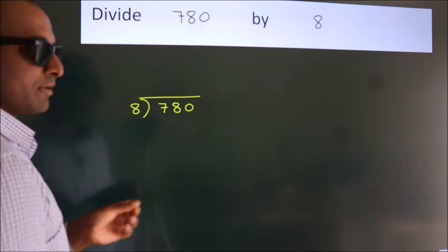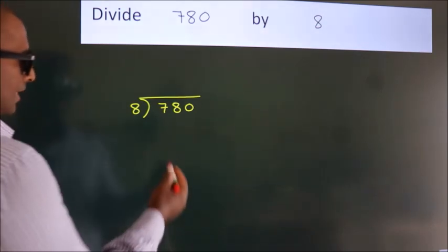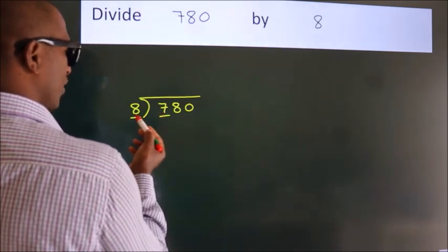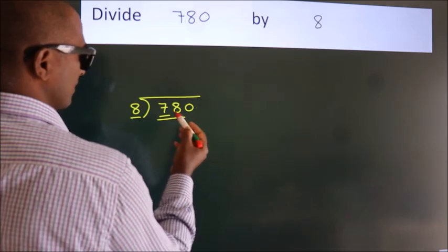This is your step 1. Next, here we have 7, here 8. 7 smaller than 8. So we should take two numbers, 78.